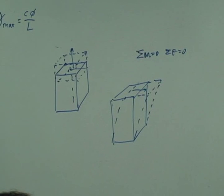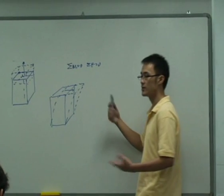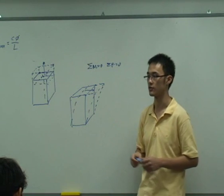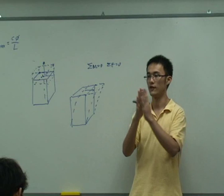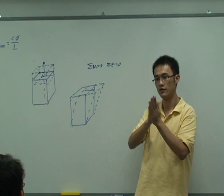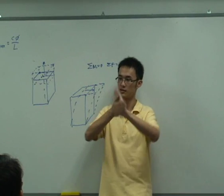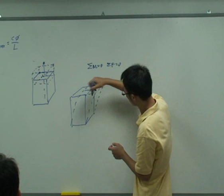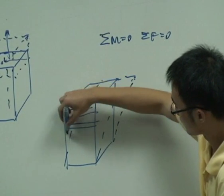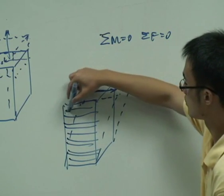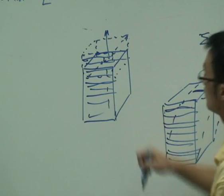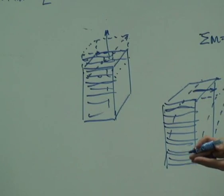An easier way to think about normal stress and strain versus shear stress and strain: think of normal stress as the separation of two planes, and shear stress as the friction between planes. For shear, if you push one plane in a direction, and the object consists of infinitely many planes, between each plane there will be friction. For normal stress, between each plane there is a tendency of separation.